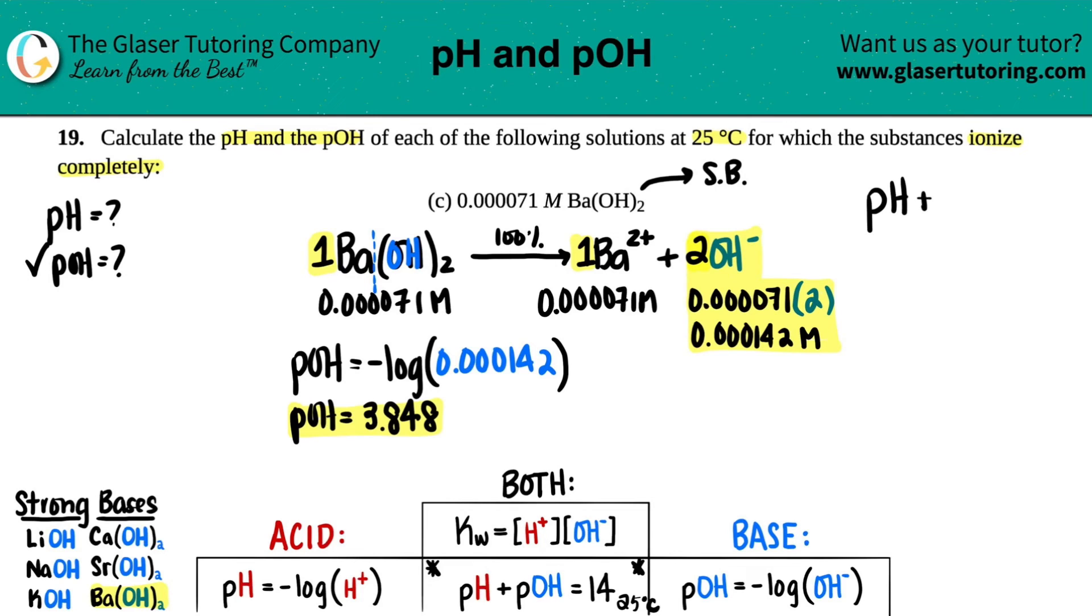So pH plus pOH equals 14. Since we're trying to solve for the pH, I could just rearrange this formula by saying pH equals 14 minus the pOH, right? And then we'll color code this, right? Reds with reds and blues with blues. So all we have to do here now is just say, okay, pH equals 14 minus the pOH that we just found, 3.848. All right. 14 minus 3.848. I get 10.152. No units for pH or pOH, just like an indicator value on a scale. And we're good.